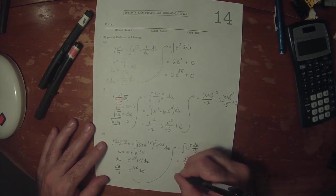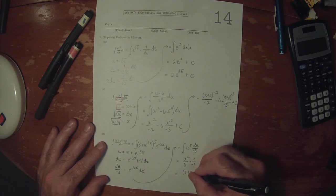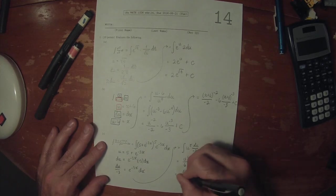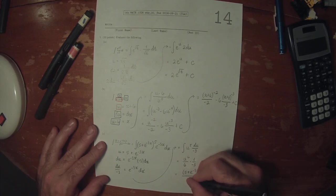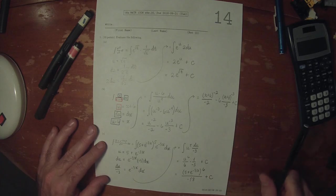And then now to substitute back in. That would be 5 plus e to negative 3x to 6, divided by... I'll combine those and make it negative 18, plus a constant.